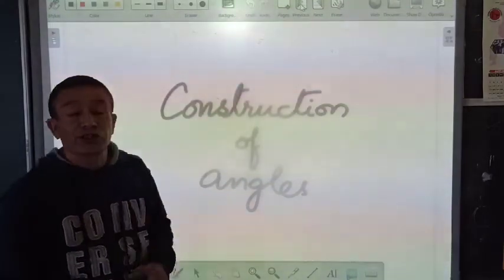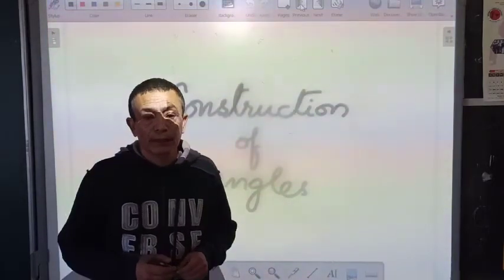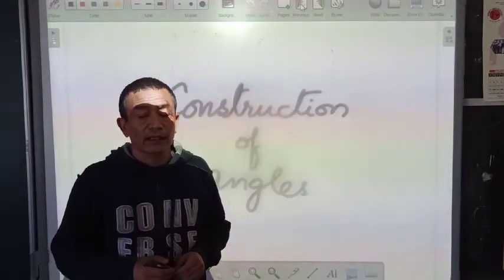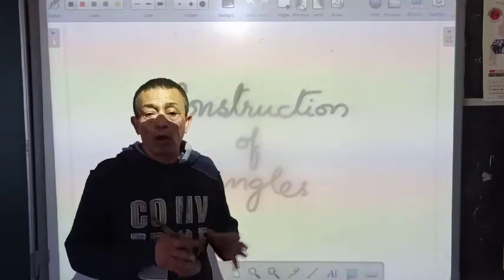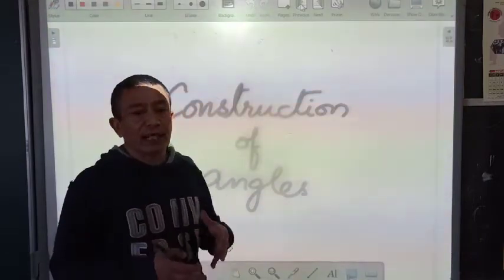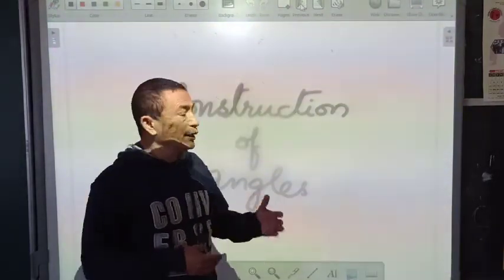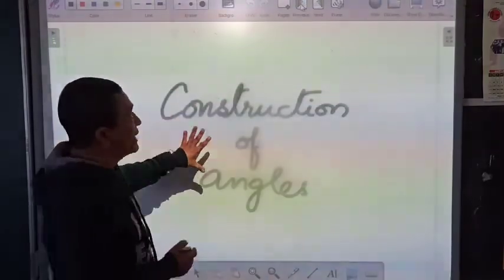We are continuing with our construction of angles. We have already done 60 degree angle, 120 degree angle, and we have also done 90 degree angle along with bisecting of angles. These are the four things that we will use further in order to do our other angles.